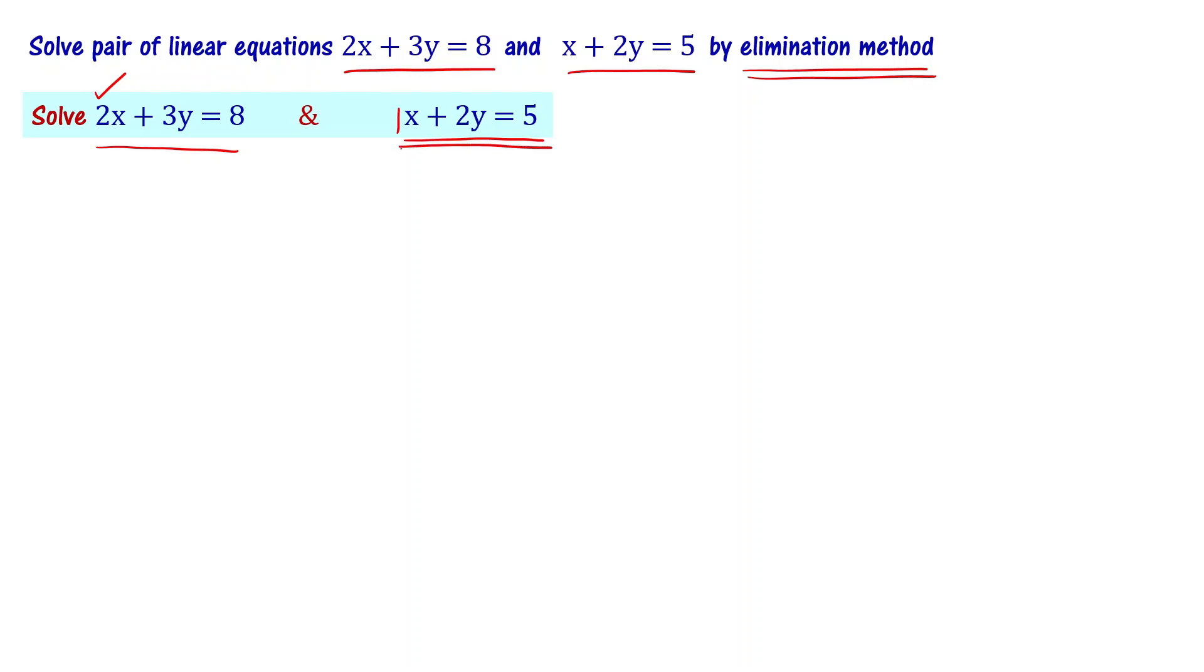Now can I multiply this equation with number 2? If I do that, I have the equation 2x plus 4y equal to 10 now. In the first equation, 2x plus 3y equal to 8. Now I want to subtract this equation from this equation. We want to subtract the second equation from the first equation.